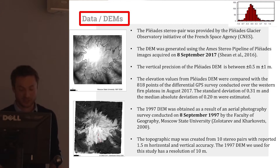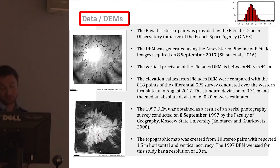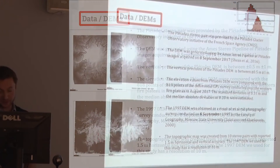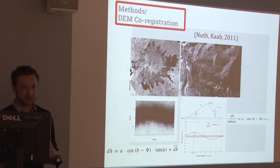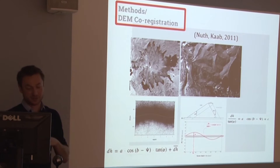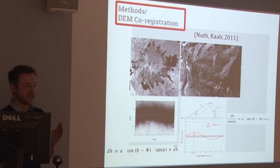The 1997 digital elevation model was done by Moscow State University through aerial photography. The vertical accuracies of these two models are within 1.5 meters — very high resolution and very precise. But — and this is an important but — before you can just take two digital elevation models, compare them, and get results, you have to make sure they are co-registered, so geo-referenced one to another.